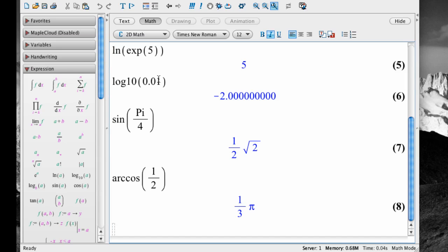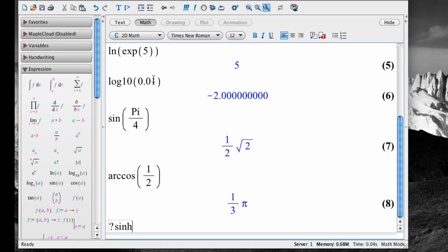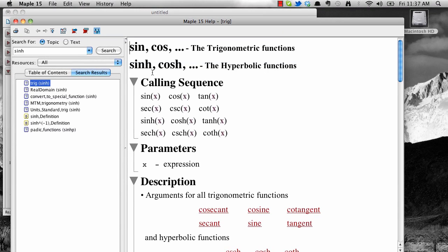Maple has many more mathematical functions built into the system. If you have one in mind that you'd like to use, or if you want help on a function that you're trying to use, go to the cursor and type a question mark followed by the thing you want help on. For example, if I wanted to find the function for hyperbolic sine, it's usually abbreviated S-I-N-H, I could type question mark S-I-N-H and hit enter, and it would bring up a help screen.